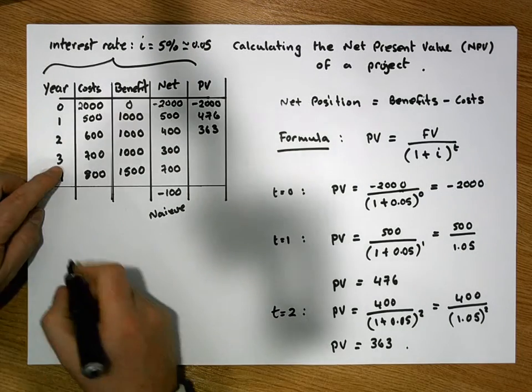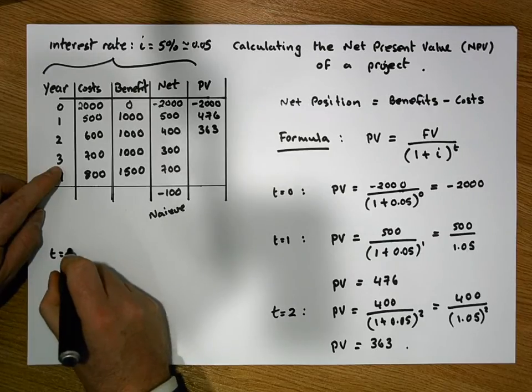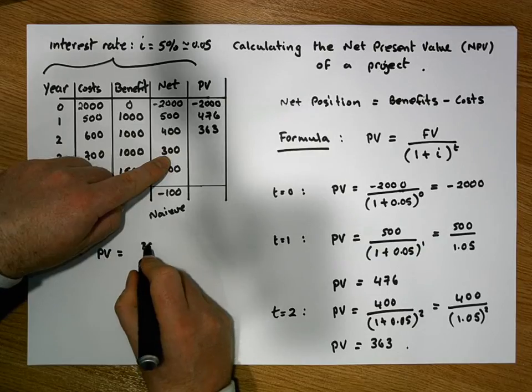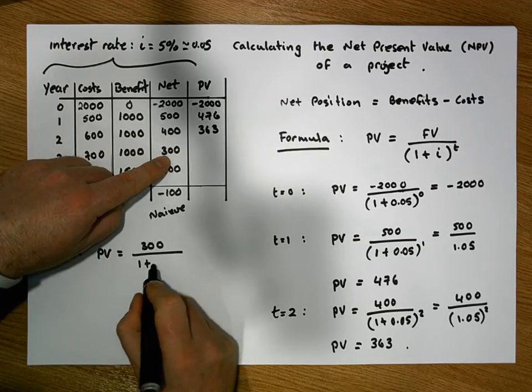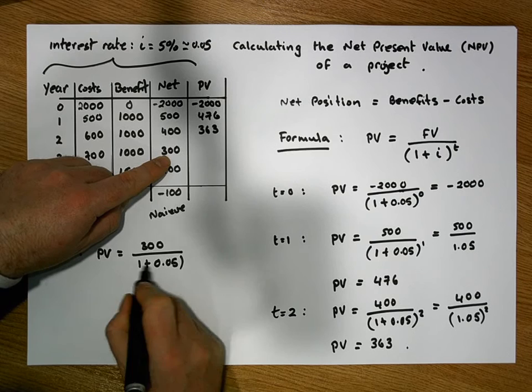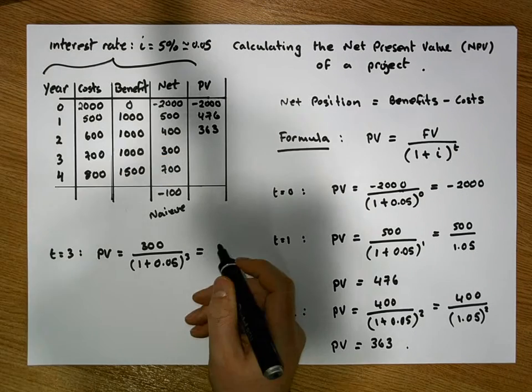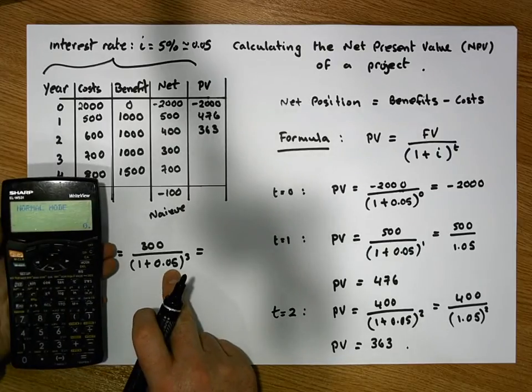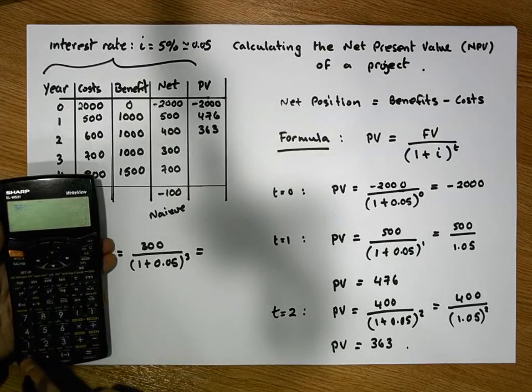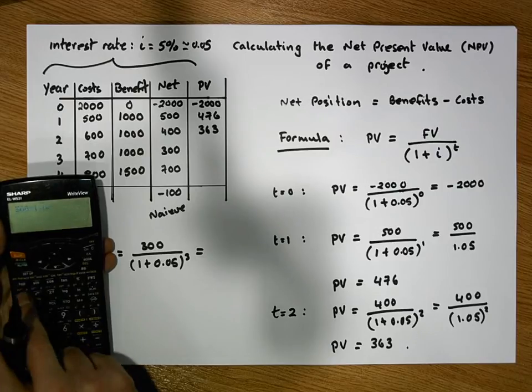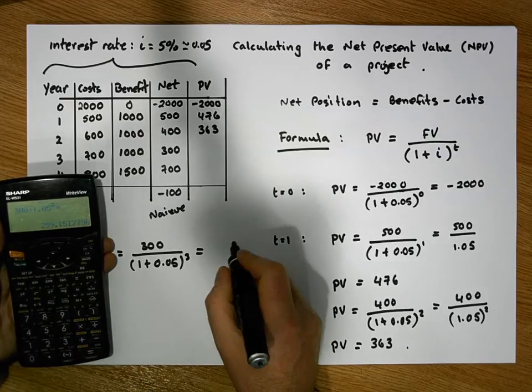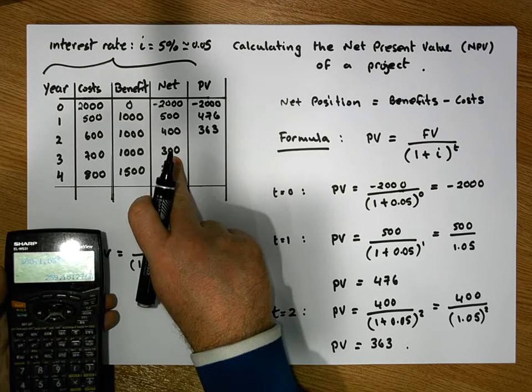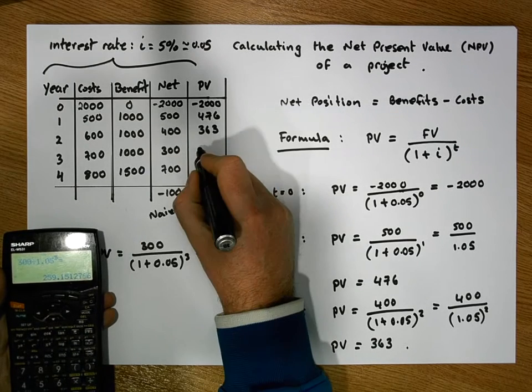Let's do when t is equal to three. So the present value is equal to 300, the net position in year three, divided by one plus 0.05, raised to the power of three. Now I'm gonna do that in one go on the calculator. That's one plus 0.05 is 1.05, so it's 300 divided by 1.05, raised to the power of three, gives us a value of 259 euros. So 300 euros in three years' time is only worth 259 euros today.